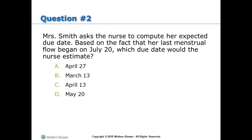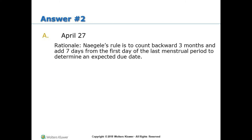Practice Question 2: Mrs. Smith asks the nurse to compute her expected due date. Based on the fact that her last menstrual flow began on July 20th, which due date would the nurse estimate? A) April 27; B) March 13; C) April 13; D) May 20. Answer: A — April 27. Rationale: Naegele's rule is to count backward 3 months and add 7 days from the first day of the last menstrual period to determine an expected due date.